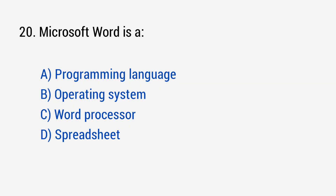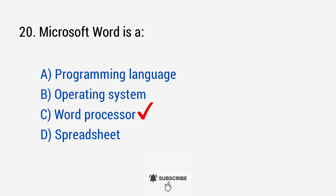Question number 20: Microsoft Word is a? The right answer is option C: Word processor.